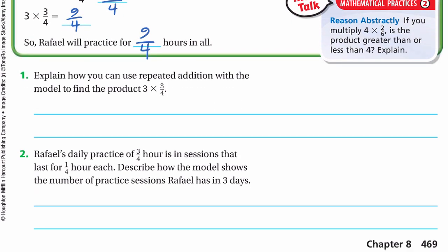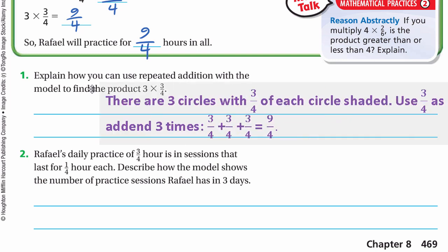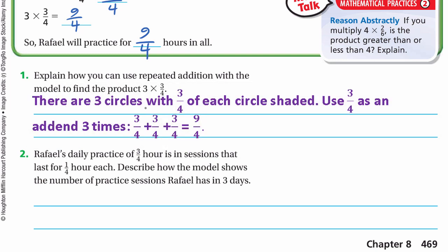Here is a question: how can you use repeated addition with the model to find the product of 3 multiplied by three-quarters? There are three circles with three-quarters of each circle shaded, so we use three-quarters as an addend three times. Three-quarters plus three-quarters plus three-quarters: we write the denominator as it is, and three plus three is six, plus three is nine. So we have nine-quarters.